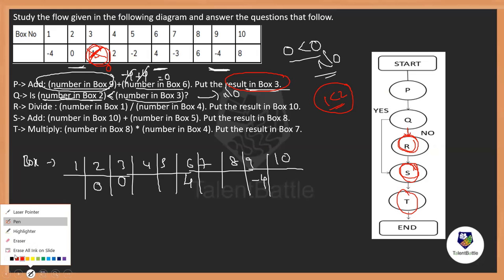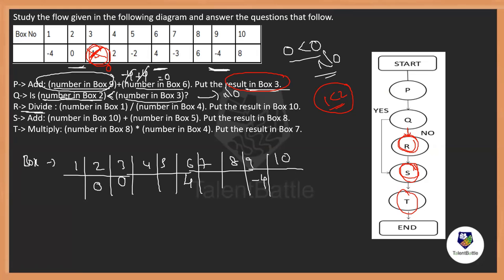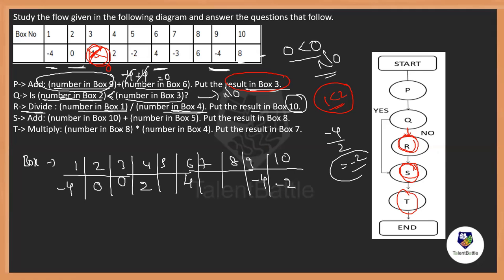Step R: divide box[1] by box[4]. Box[1] = −4 and box[4] = 2, so −4 ÷ 2 = −2. Place −2 in box[10]. Box[10] was 8 originally but now becomes −2.